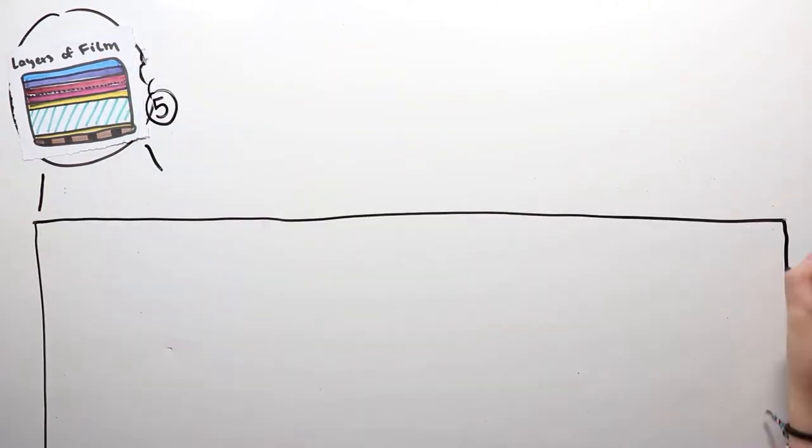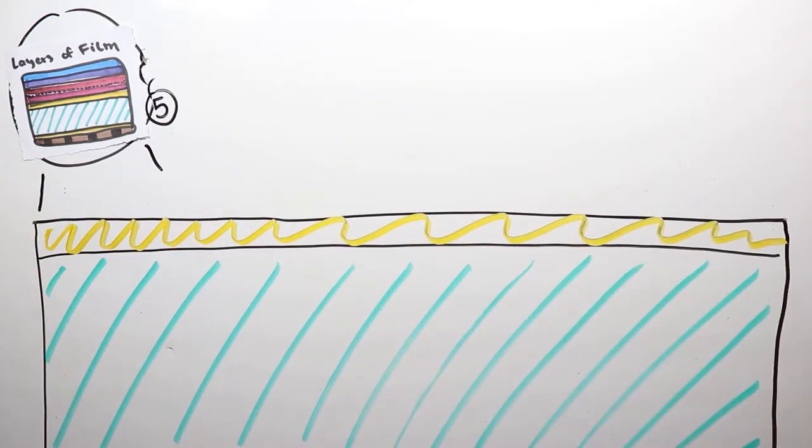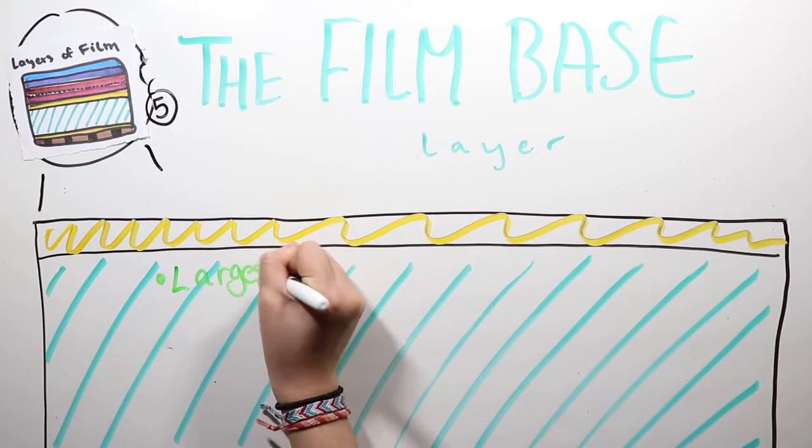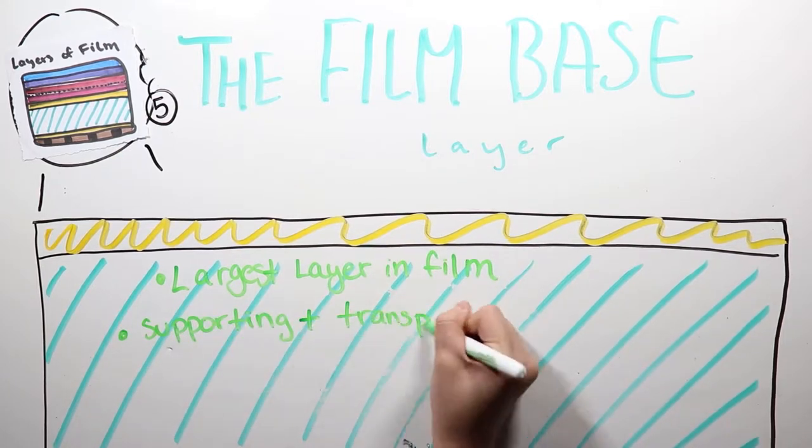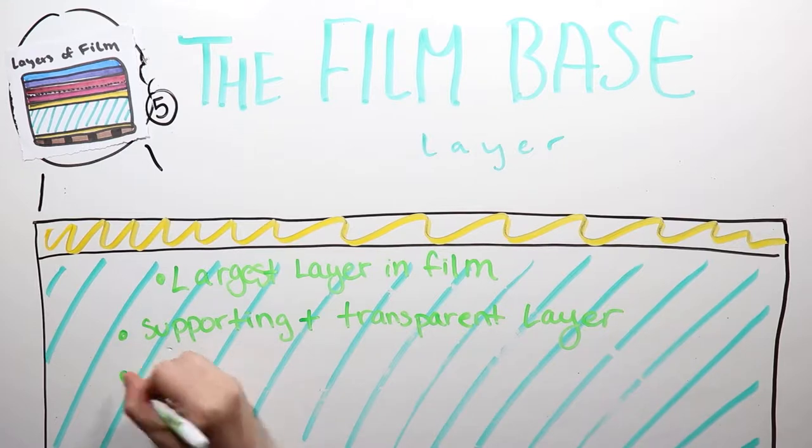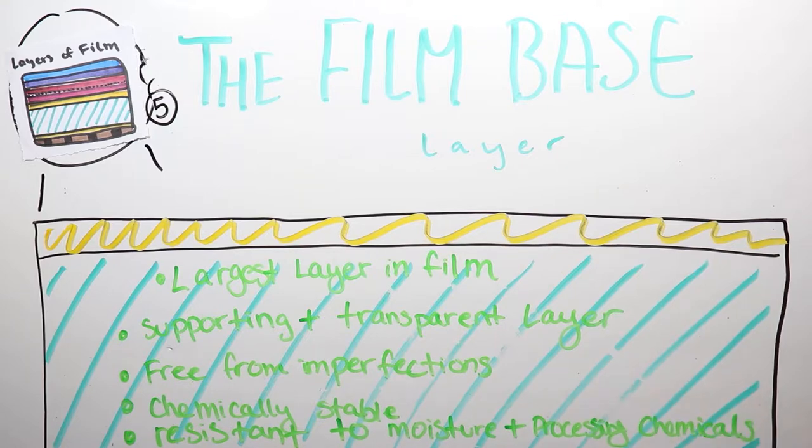The next layer is a supporting layer called the base, or the film base. This base has to be transparent with some optical density, free from imperfections, chemically stable, insensitive photographically, and resistant to moisture and processing chemicals, while remaining mechanically strong, resistant to tearing, flexible, and dimensionally stable.